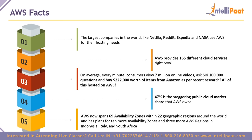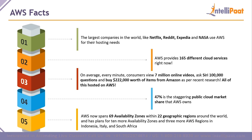AWS provides 165 different cloud services right now, including machine learning and artificial intelligence, and the number keeps growing. On average every minute, consumers view 7 million videos online, ask Siri 100,000 questions, and buy $222,000 worth of items from Amazon — all hosted on AWS. In fact, one-third of any website you visit online is likely hosted by AWS, meaning about 33% of all websites are on AWS infrastructure.